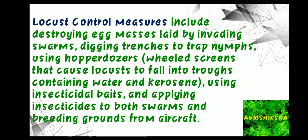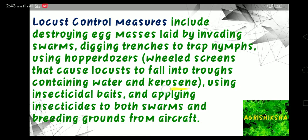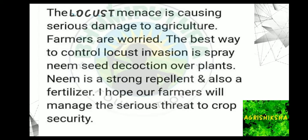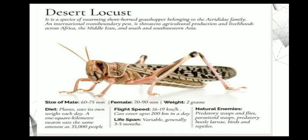Locust control measures include destroying the egg masses laid by invading swarms, digging trenches containing water and kerosene, using insecticidal baits, and applying insecticides to both the swarms and the breeding grounds from aircraft. Locusts are very destructive to the agriculture sector. To control locust invasion, we can spray neem seed decoction over the plants, as it is a strong repellent and also a good fertilizer.